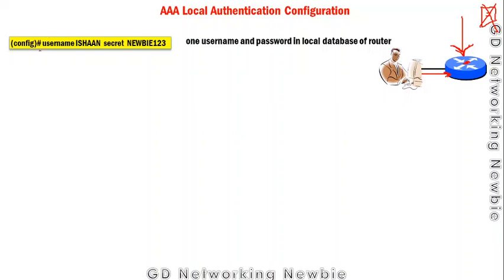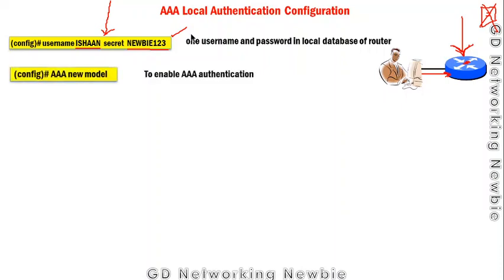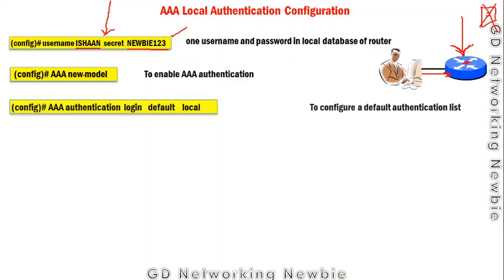As an example, I have created one username and password on the router. You can use stronger encryption techniques to make it more secure, but in simple terms this is the username and password created in the local database. Then we need to enable AAA authentication using the command `aaa new-model`.